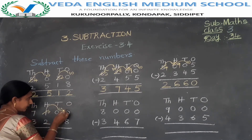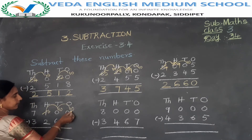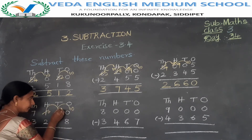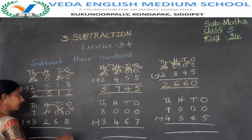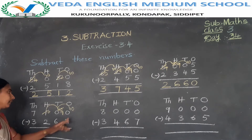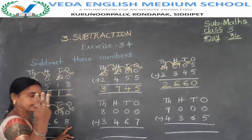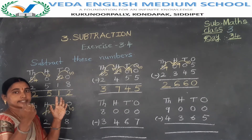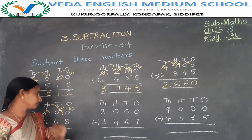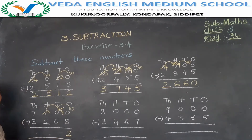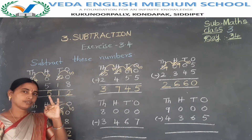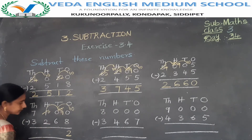Take a borrow from the 10th place to the 1st place. 10 plus 0 is 10. The 1 ten going to the ones place — remaining 9 tens. Now do the subtraction: 10 minus 0 is 10... then 10 minus 8. Backward counting: 10, 9, 8, 7, 6, 5, 4, 3, 2 — so 10 minus 8 is 2. Then 9 minus 6: backward counting — 9, 8, 7, 6, 5, 4, 3 — equals 3.